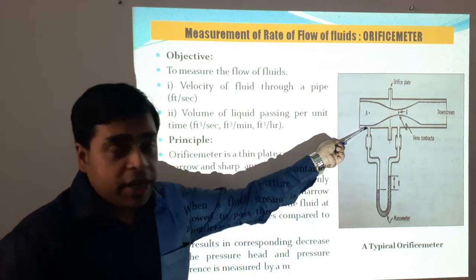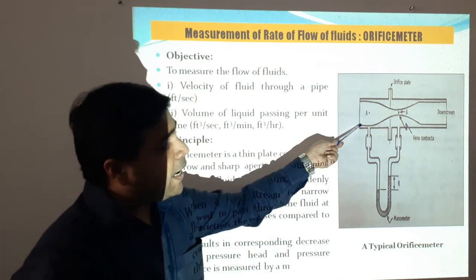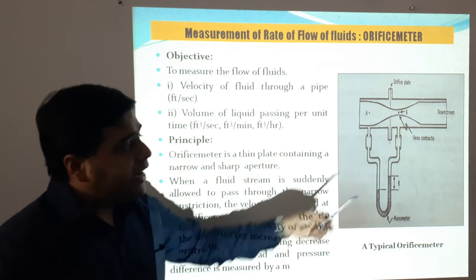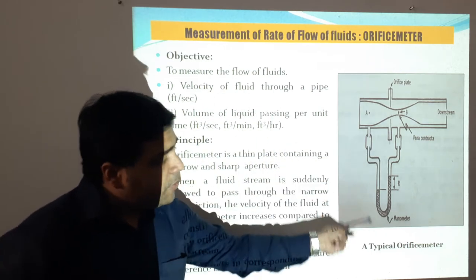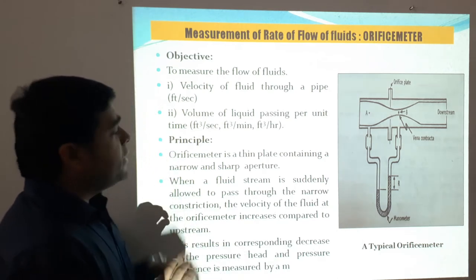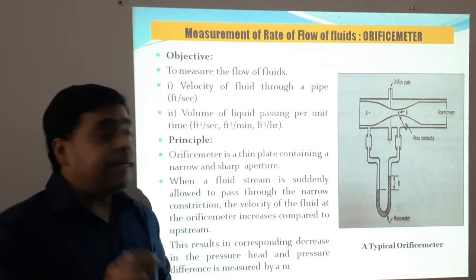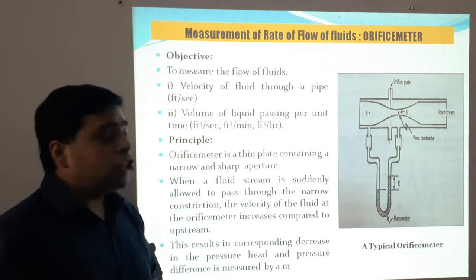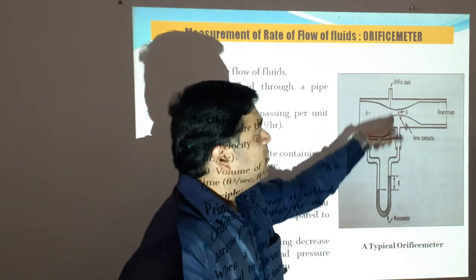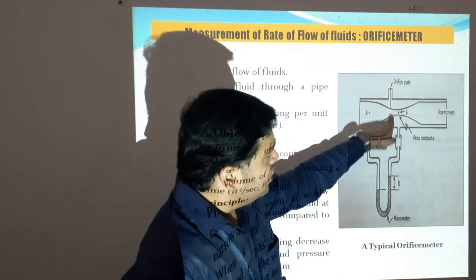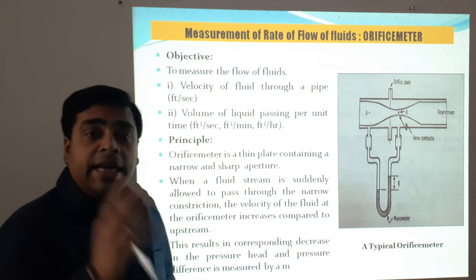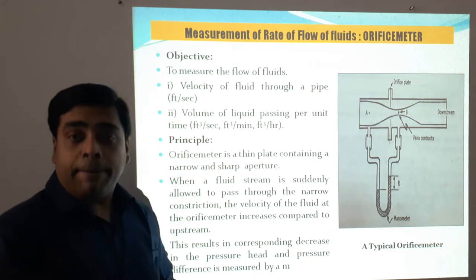It is a simple pipe in which fluid flows from point A to point B, and a simple manometer is attached for measurement. The orifice meter is a thin plate containing a narrow and sharp aperture. Inside the pipe, the fluid movement is restricted with the help of this plate.